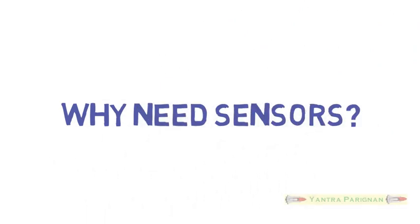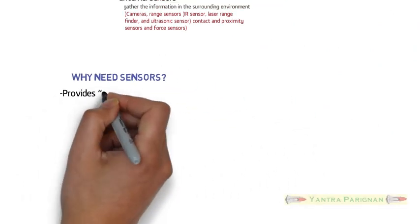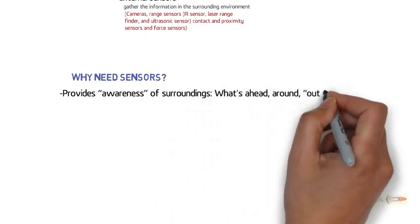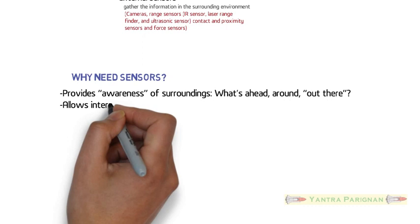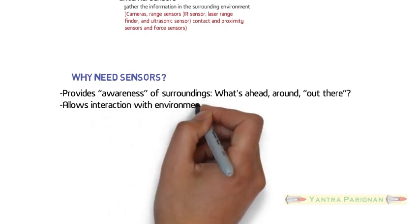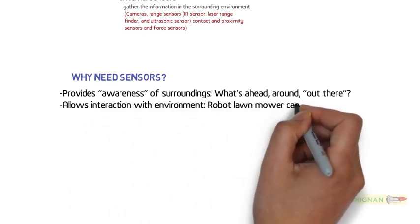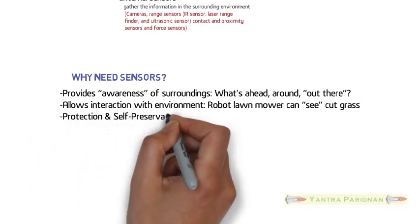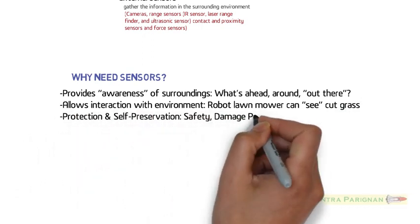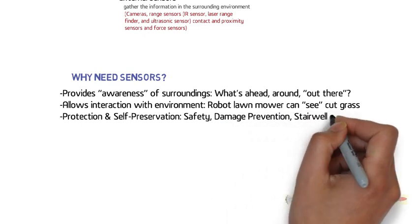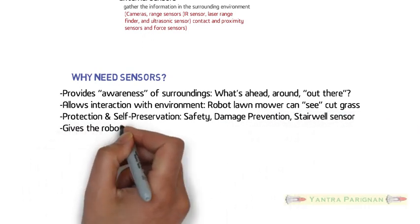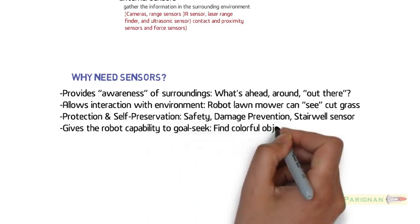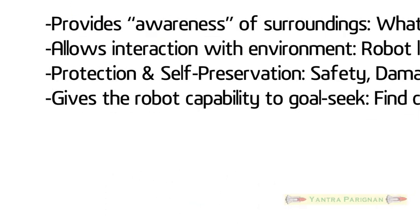Why a robot needs sensors? Because sensors provide awareness on surroundings such as what's ahead, what's around, what's out there. Sensors allow interaction with environment such as robot lawn mower can see cut grass. Sensors protect robot itself and are used for self-preservation. Sensors give the robot capability to goal seek, that means it can find colorful objects and seek goals.